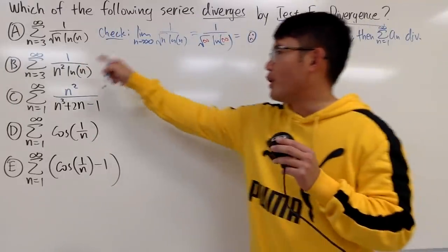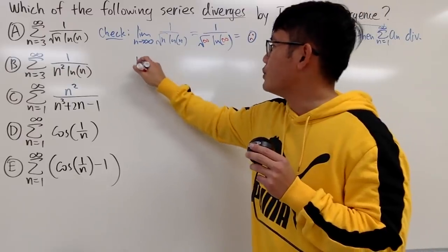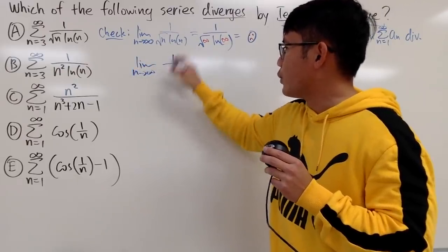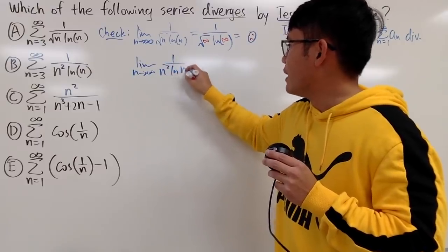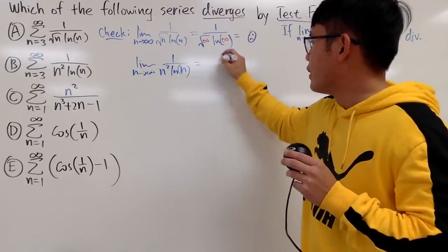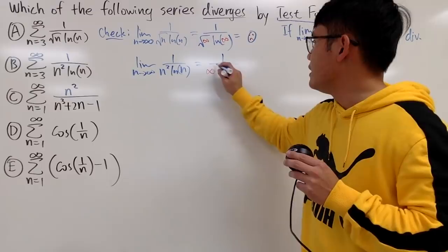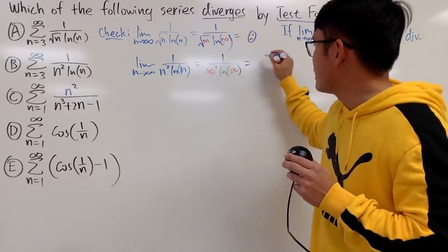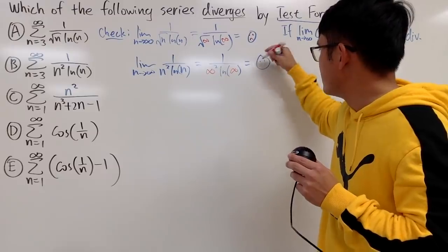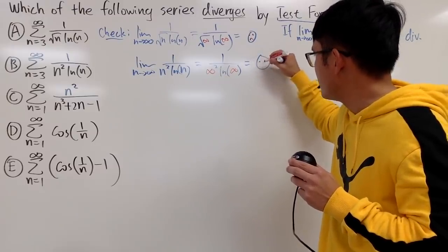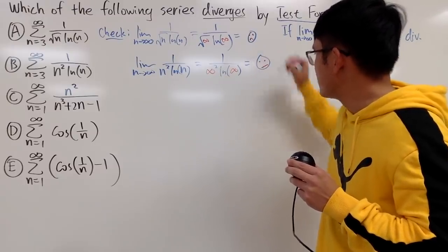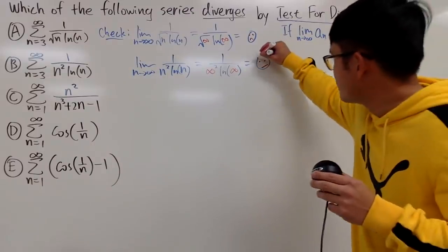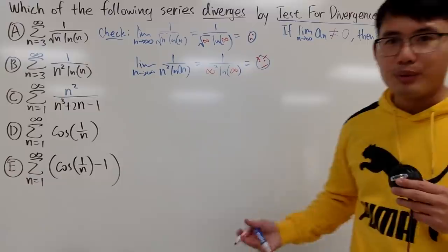Now, next one, we have 1 over n squared times ln of n, which is pretty much the same thing, but I will still write down the work for you guys. So 1 over n squared times ln of n, this right here, 1 over infinity squared times ln of n, still get that sad face 0. Maybe this time I'm making it into an angry face. How do I do it like this? Maybe just put some eyebrows like this. Angrier.